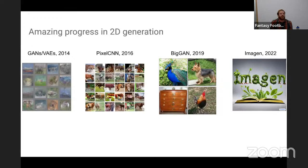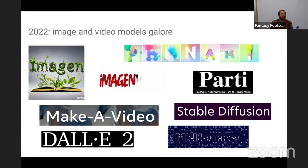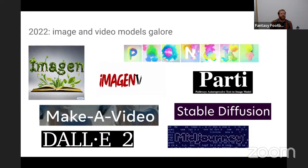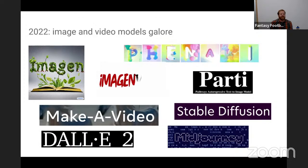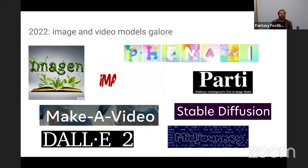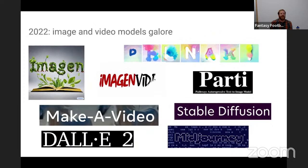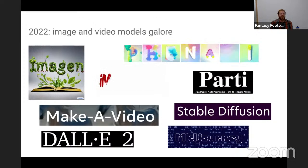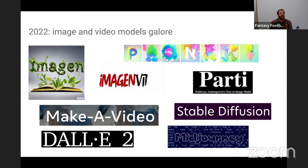It's been really incredible to see the progress over the past almost 10 years in image generation. Last year was really astounding — even having been in this field for many years — to see the number of methods and models developed for image and video generation. We had methods like Midjourney, Stable Diffusion, DALL-E 2, and for video, Make-a-Video, Imagen Video, and Phenaki.